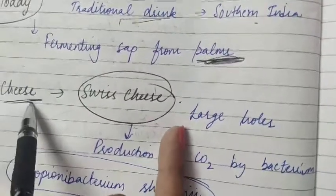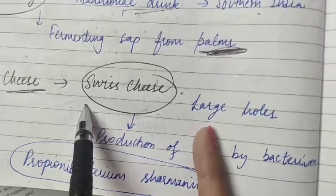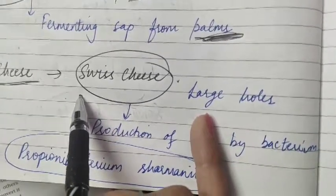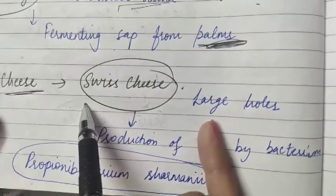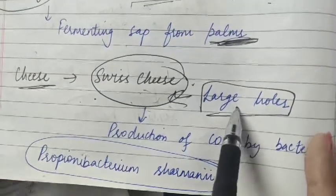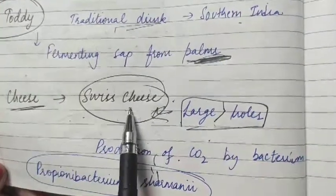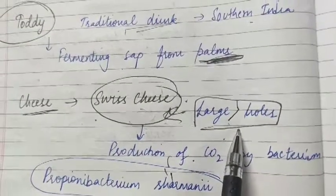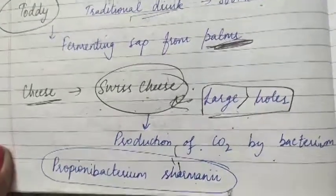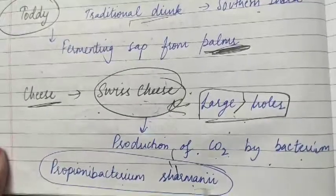Cheese is one of the oldest food items in which microbes are used. We see different varieties of cheese with different texture, flavor, and taste depending on which microbes are used. For example, Swiss cheese has large holes due to large amounts of CO2 production by a bacterium named Propionibacterium shermanii.